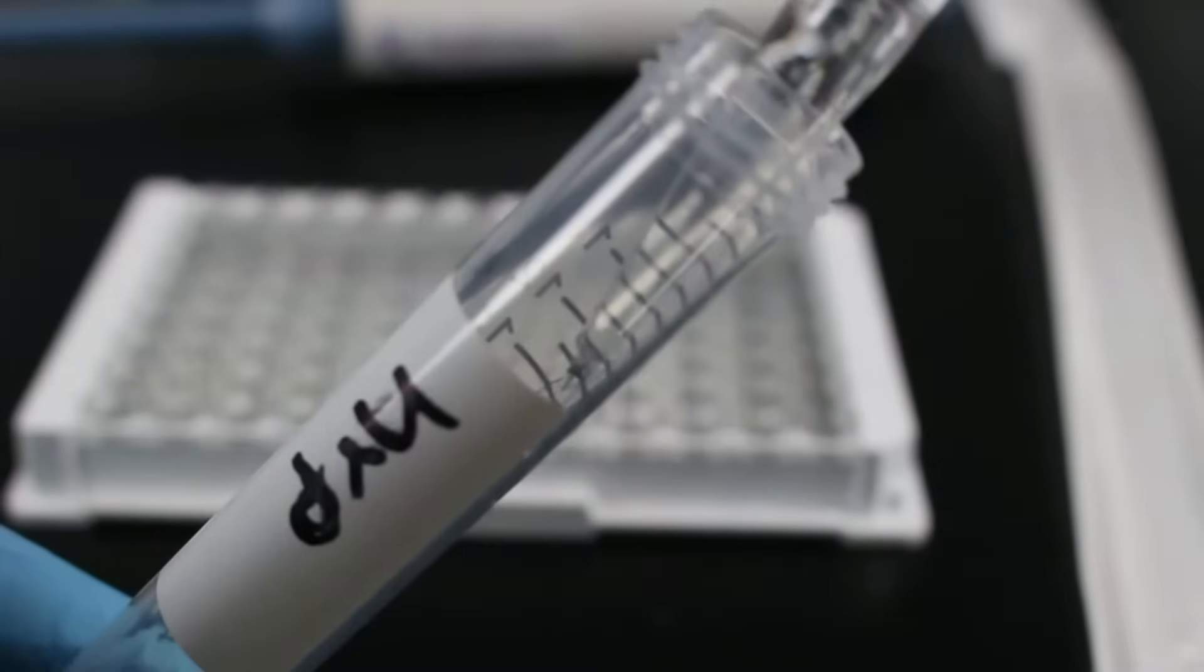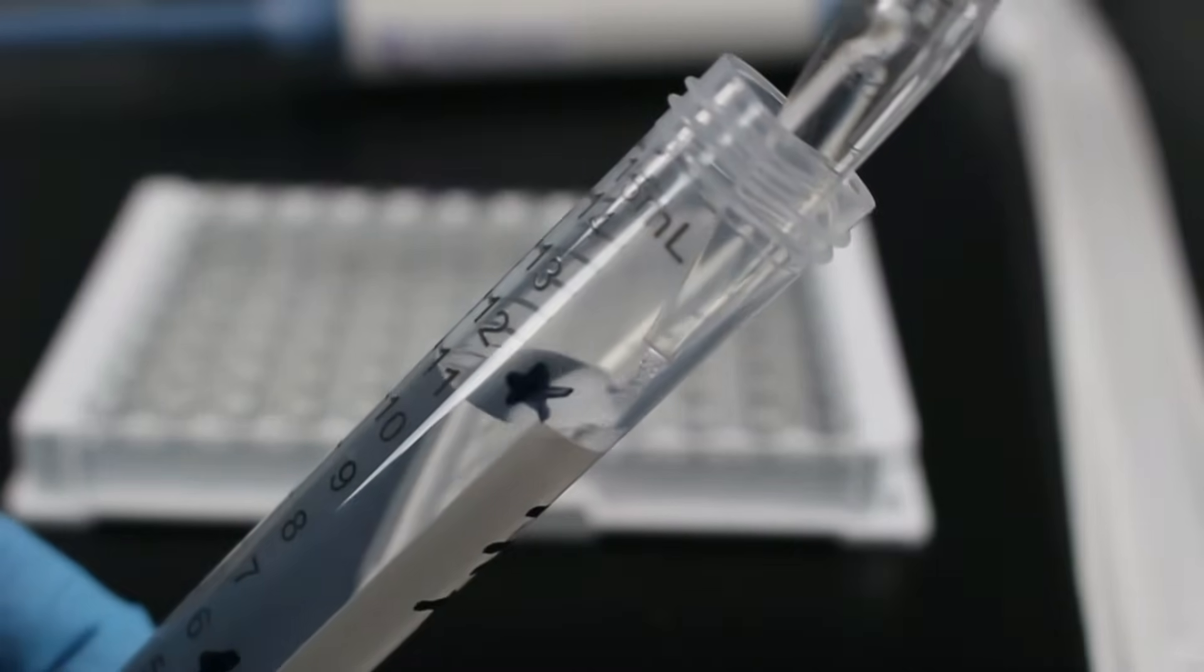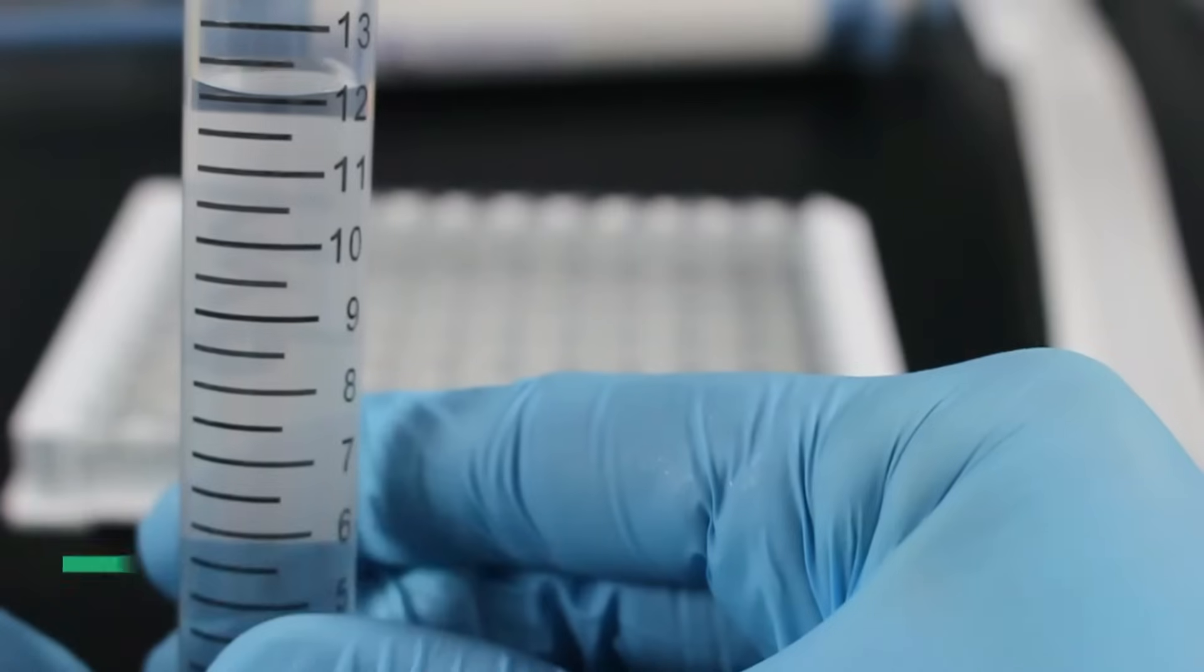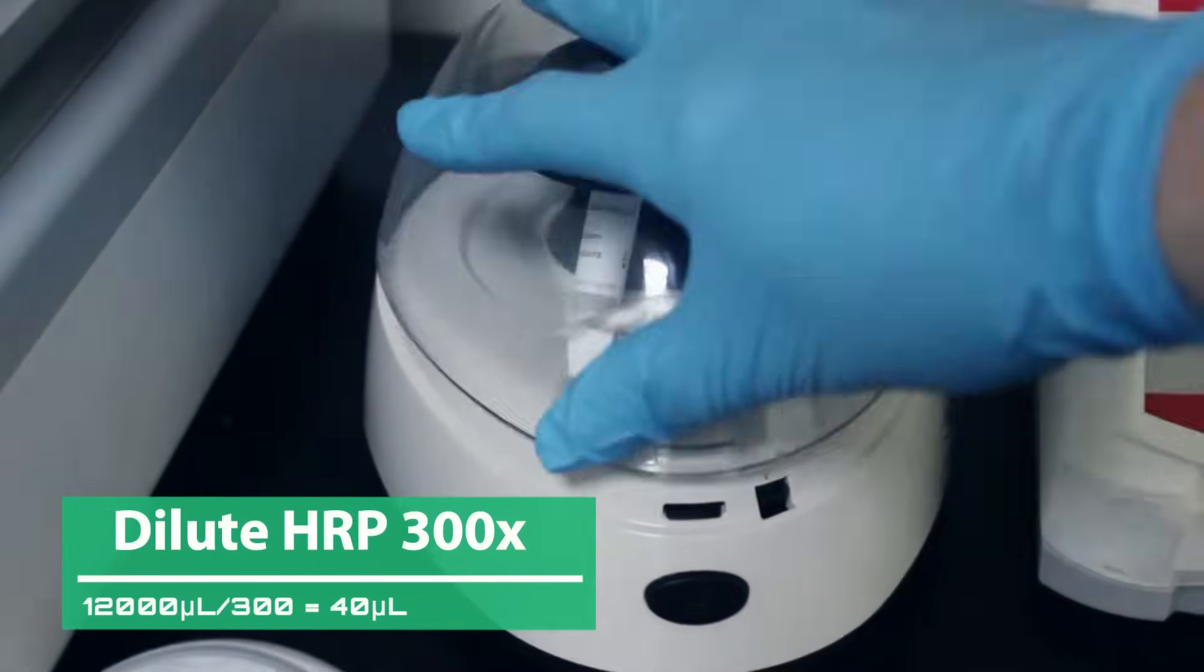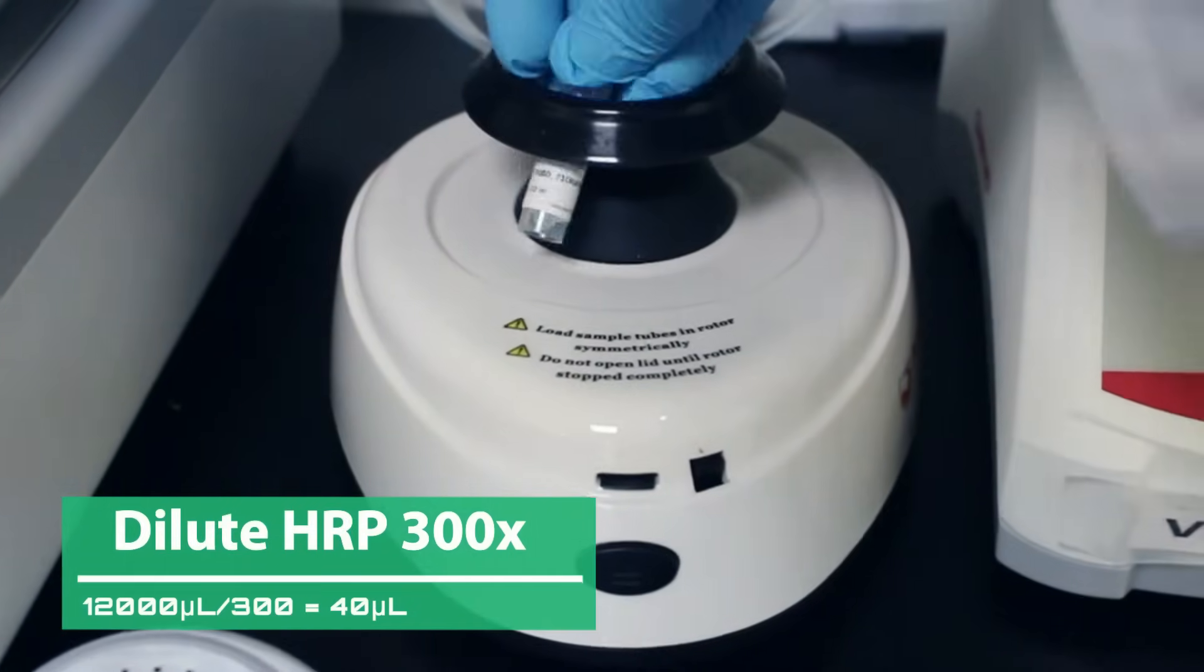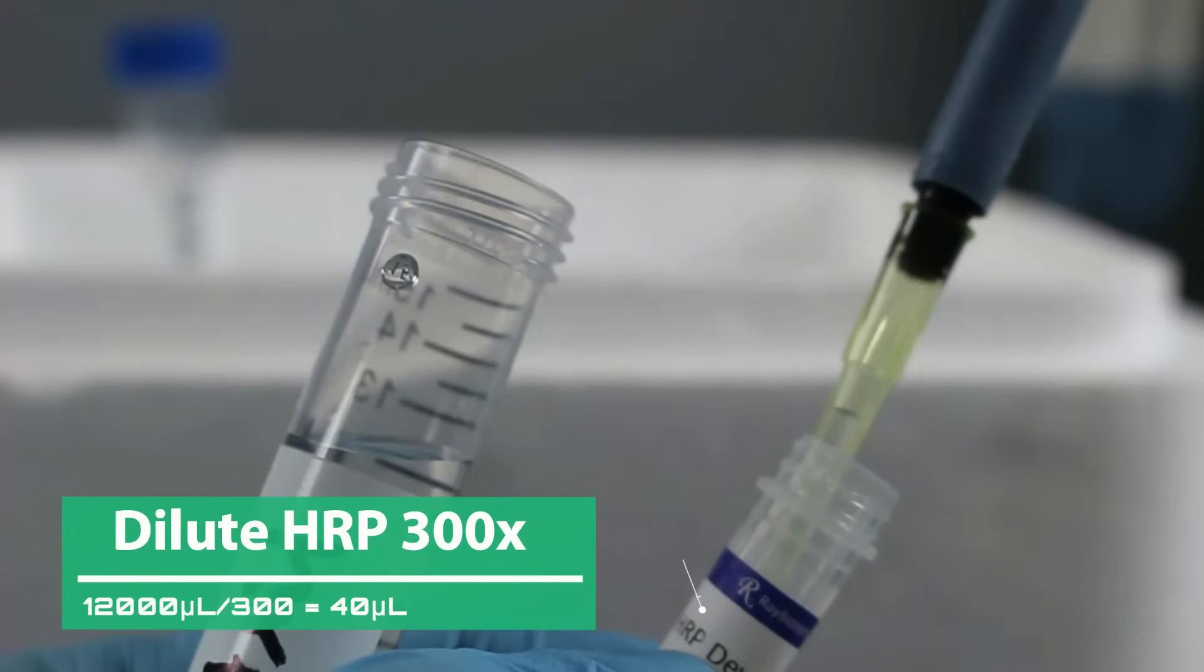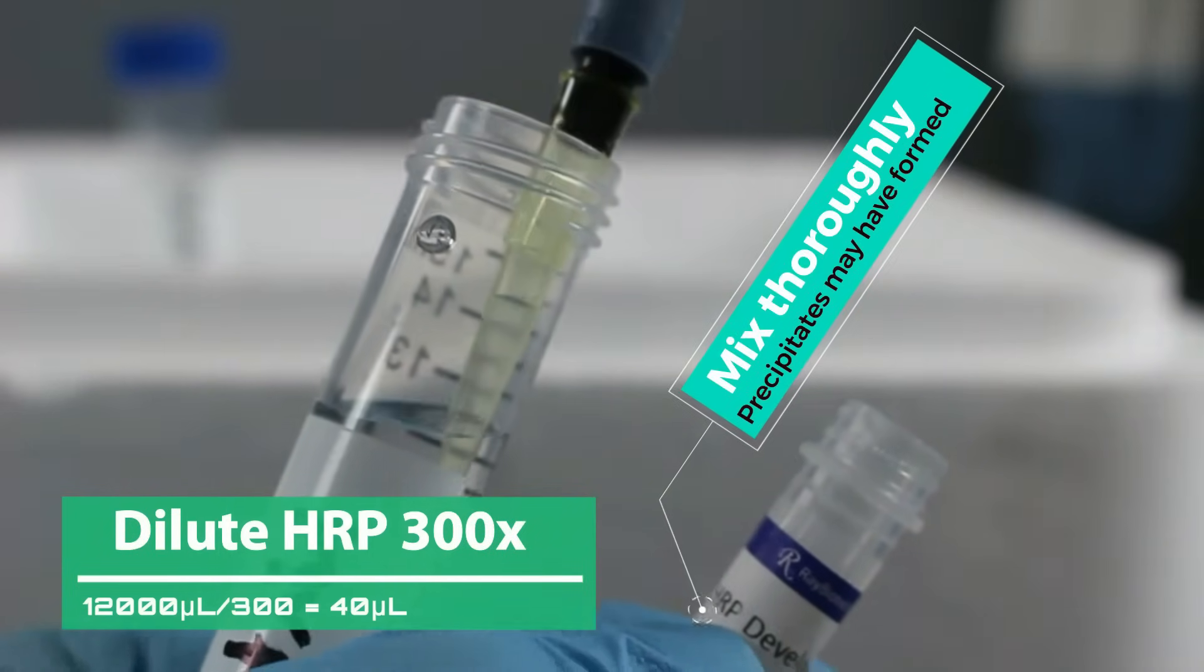The total volume of HRP is calculated in the same way as the detection antibody. We are using a full plate, so we will use 12 milliliters of ADB. Add 100 microliters to each well. Spin down and mix the HRP prior to use. Our target specific HRP dilution is 300x, so we will add 40 microliters.